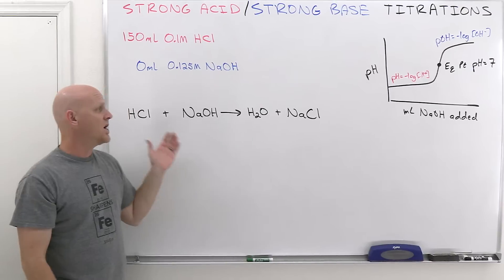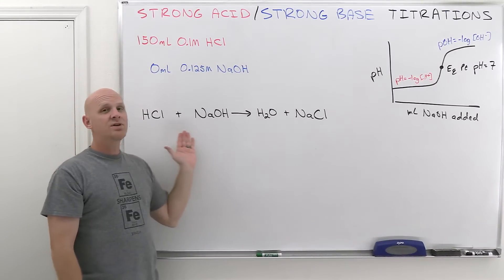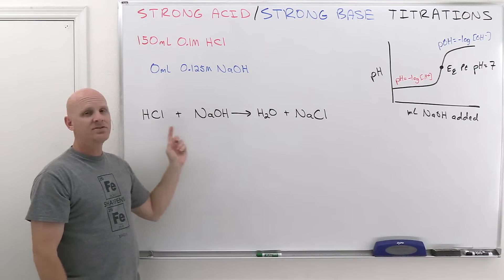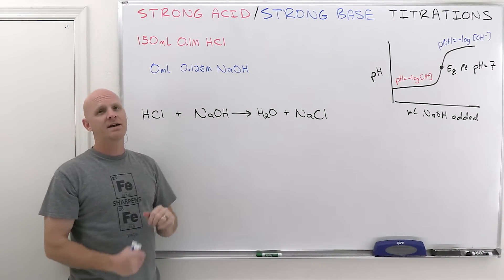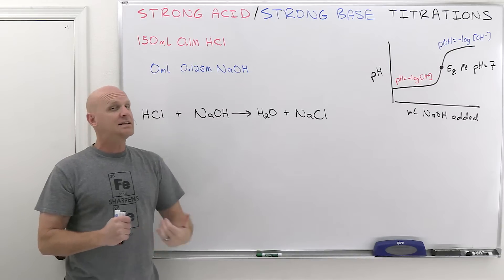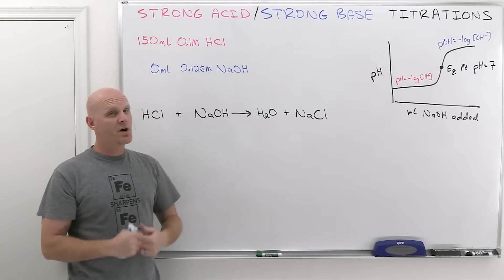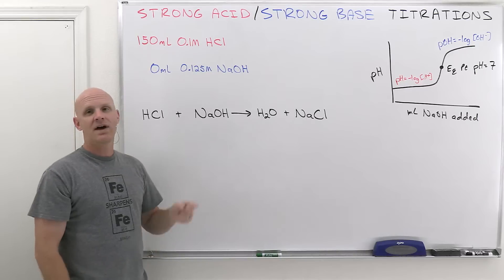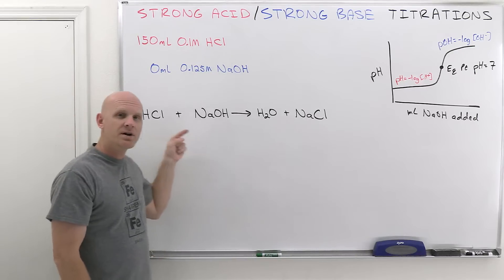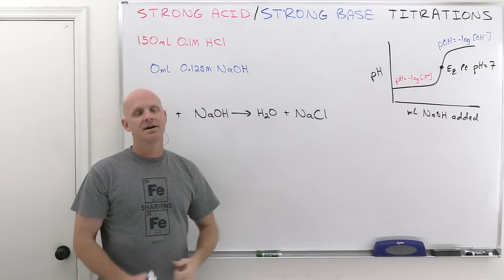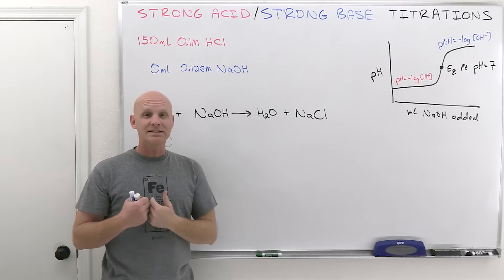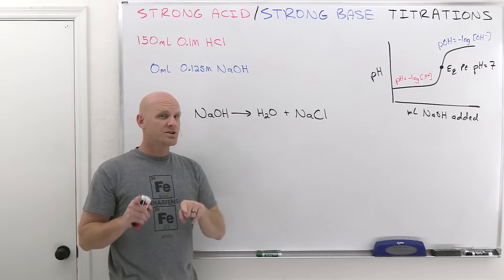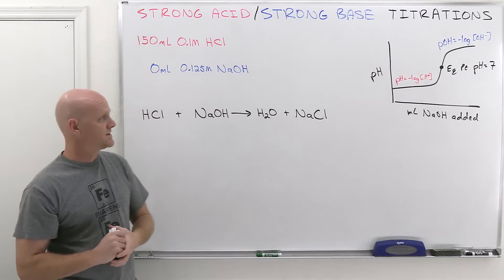We're going to treat this as a limiting reagent calculation. When an acid and a base react with each other, as long as at least one of them is strong — and in this case they're both strong — that reaction is going to go to completion. Reactions that go to completion are simply limiting reagent problems, and we'll treat them as such.